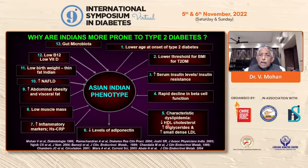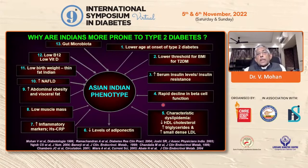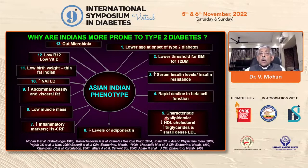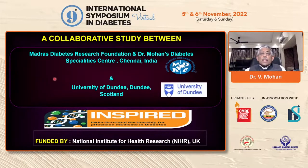We wanted to see whether this classification could be applied to Indians, because many speakers in this meeting have worked on the Asian Indian phenotype — which consists of lower age at onset of type 2 diabetes, a lower BMI threshold for diabetes, insulin resistance, and very importantly, a rapid decline in beta cell function occurring much more rapidly in our population. Therefore, the progression from normal glucose tolerance to pre-diabetes and to diabetes occurs much more rapidly. Also very important is the hallmark of the South Asian phenotype: very low HDL levels and high triglycerides with small dense LDL.